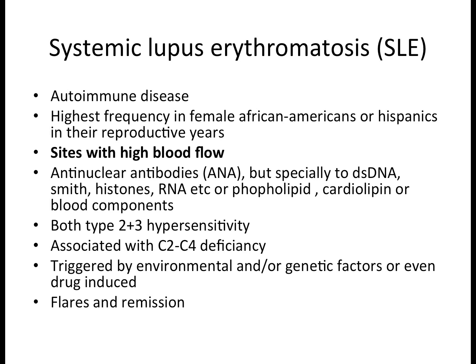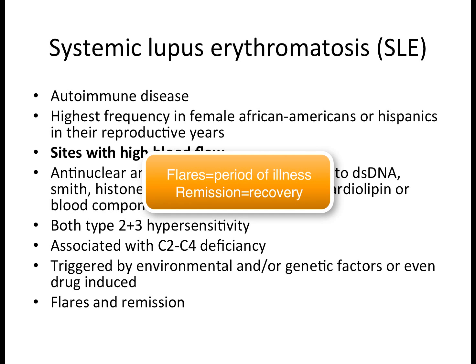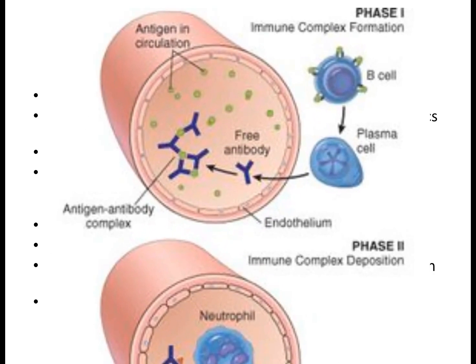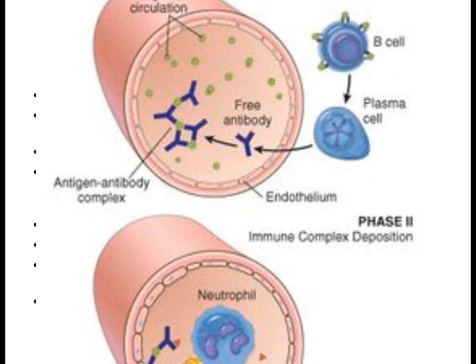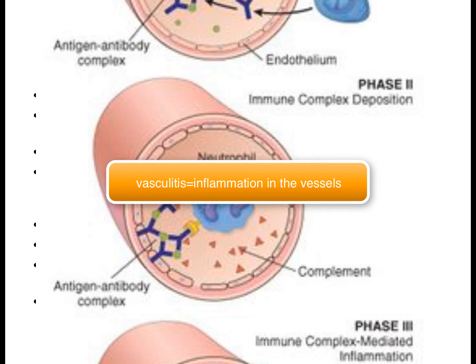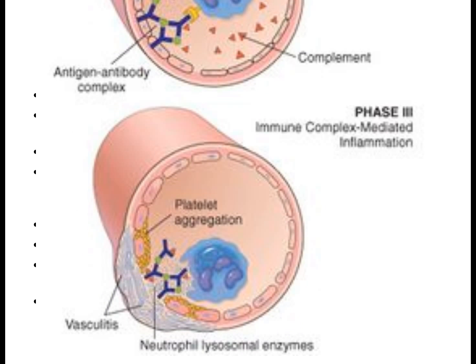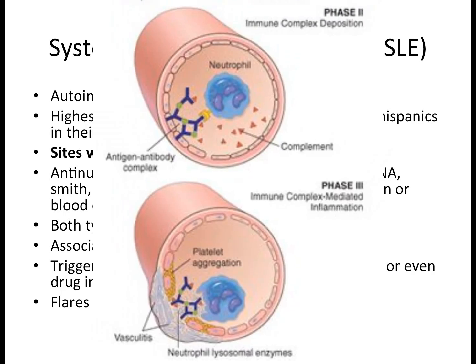Clinically, SLE presents with flares — periods of illness — and remission, which is recovery. This is not a constant process; it has its ups and downs. A major rule to remember is that because SLE involves type 3 hypersensitivity and immune complex formation, it primarily affects blood vessels, inducing vasculitis. Inflammation in the vessels leads to thrombosis and ischemia, which is a key keyword in SLE.